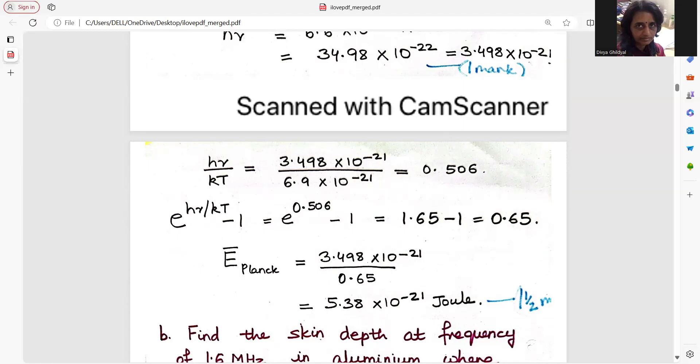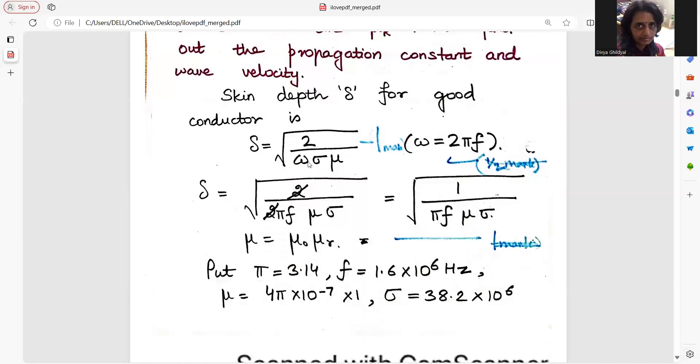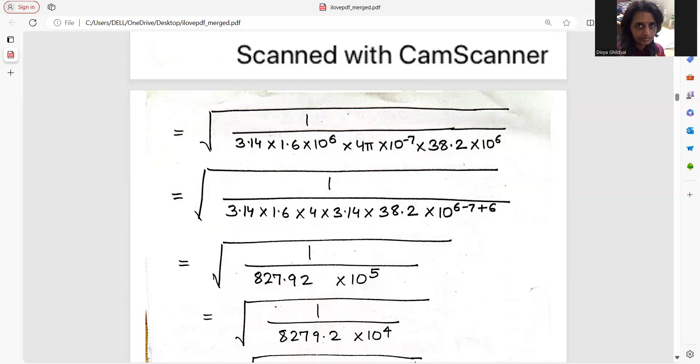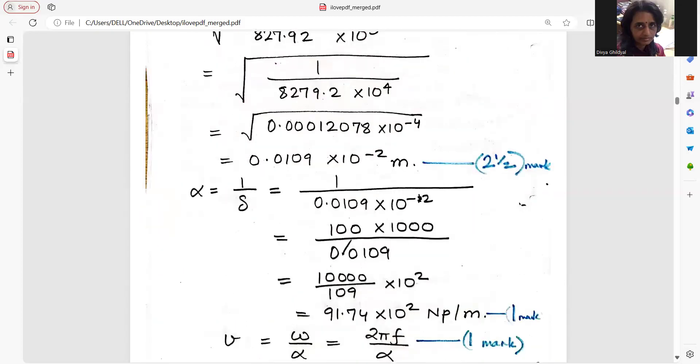Next, skin depth numerical. I had told earlier also skin depth. Frequency given is 1.6 megahertz. Change it into hertz by multiplying it by 10 to the power of 6. Rest all is very easy. Simple formula of skin depth: del is equal to under root 2 upon omega sigma mu. Omega is 2 pi f. Keep this value here. You get this. Then mu is this much pi f mu sigma. You have all the values. You put them here in the numerical. You can show it step by step. Multiply, find the square root, you get the answer. And attenuation is inverse of skin depth.